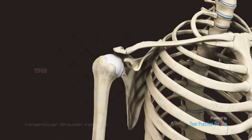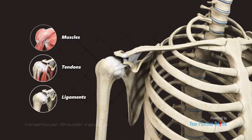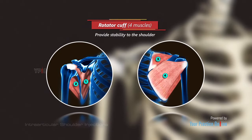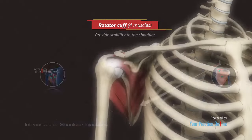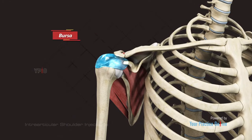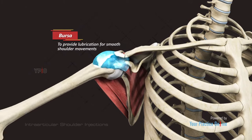The shoulder is supported by muscles, tendons, and ligaments. The rotator cuff is a group of four muscles that provide stability to the shoulder and enable arm movements in various directions. A fluid-filled sac called a bursa is present between the muscles and bones to provide lubrication for smooth shoulder movements.